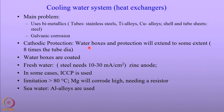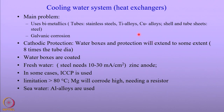Let us move on to the next topic — the cooling water system, where heat exchangers are used and these heat exchangers require cathodic protection. The main problem is that heat exchangers use bimetallics. The tubes are mainly stainless steels, titanium alloys, and copper alloys, while the shell and tube sheets are made of steel. Therefore, galvanic corrosion occurs and cathodic protection is applied to prevent it.